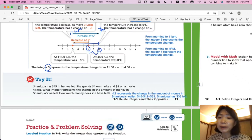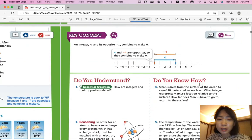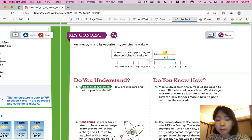Alright, so let's summarize our lesson. An integer n and its opposite negative n combine to make 0. They're called opposites. So for example positive 4 and negative 4 are opposites. And together if they're combined, if they're added together they make a 0. Alright, that was lesson 1-1 relate integers and their opposites.